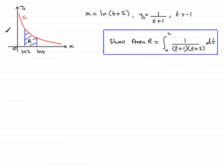Now, what we've got here is the graph of a curve C and it has these parametric equations for x and y. We've got to show that this region R, bounded by the curve, the x-axis, and the lines x equals the natural log of 2 and the natural log of 4, is given by this integral here.